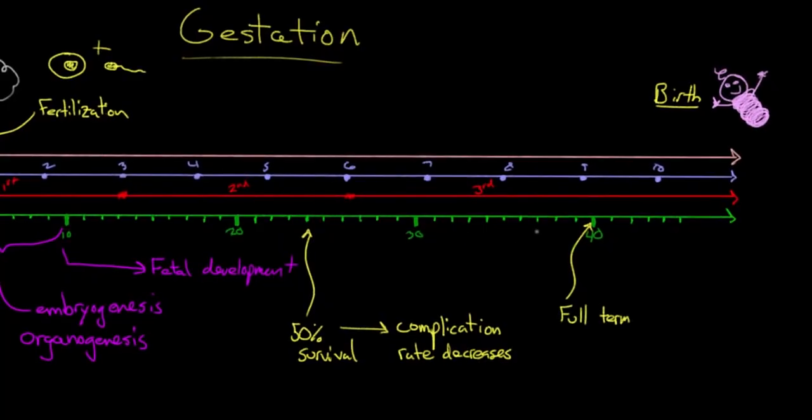There's a little bit of leeway in this definition. Most people consider full term to be a range around 40 weeks extending from 37 weeks to 42 weeks. Before that and we're in pre-term territory. After that and we're in post-term territory.